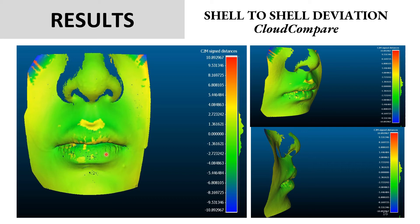This is where a shell-to-shell deviation or colour map becomes very useful. This is done using the Cloud Compare software, generated by superimposing the T1 image onto the T6 image. The intensity of the colour is proportionate to the amount of movement. The darker shade of green represents retrusion. The yellowish shade shows protracted movement or areas where minimal changes have occurred. From this, we can see that the entire perioral region moved backward at an average of about 2.72 mm. Only the region in yellow, which is the lower part of the philtrum, appears to have moved forward slightly.